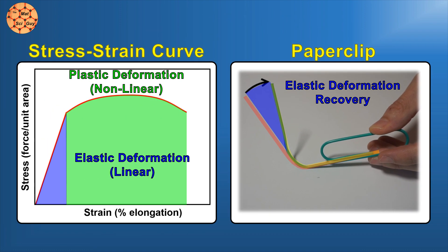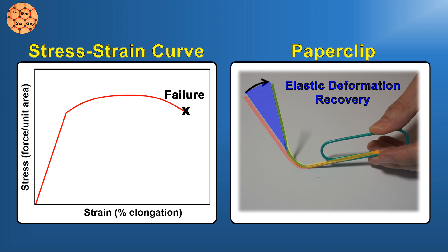Tensile stress-strain curves often run to failure, but in cases where a load is removed, we see a similarly linear region that is analogous to this.